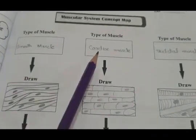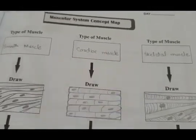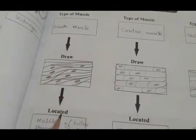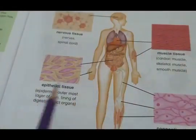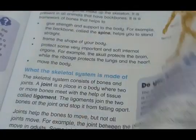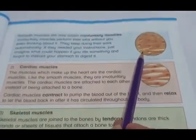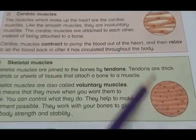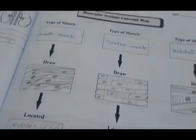We have three types of muscles: first is smooth muscle, second is cardiac muscle, and the third is skeletal muscle. See over here — this is your smooth muscle, this is your cardiac muscle, and this is your skeletal muscle. You can draw the diagrams from here.